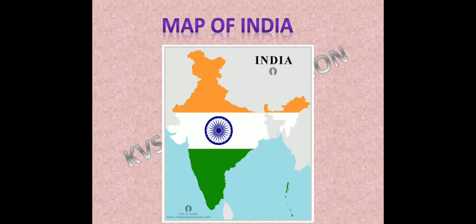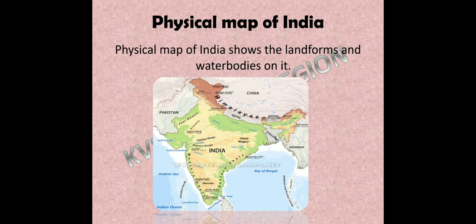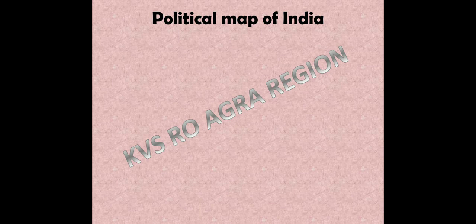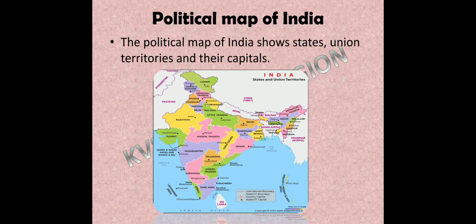Children, do you know there are 2 main types of maps of India? The first is the physical map of India, which shows the landforms and water bodies. The second is the political map of India, which shows states, union territories, and their capitals with their boundaries.